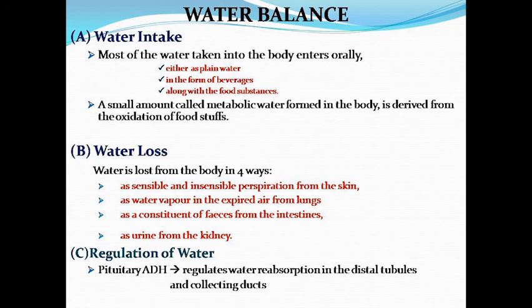If we talk about water loss, water is lost from the body in four ways: as sensible and insensible perspiration from the skin, as water vapor in the expired air from the lungs, as a constituent of feces from the intestine, and as urine excreted by the kidney. This is how water loss occurs in four ways.